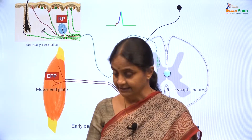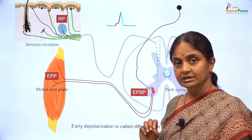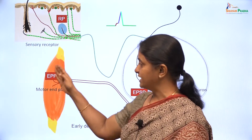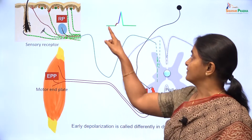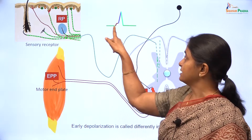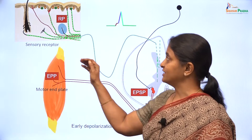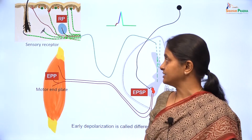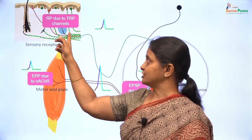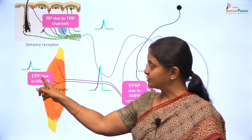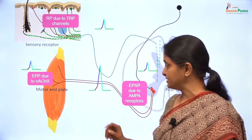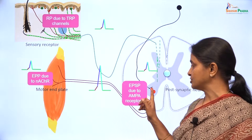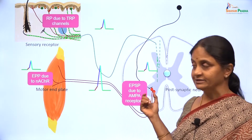We have now considered that the action potential contour is very similar in a sensory neuron, in a post-synaptic neuron, and in the motor end plate in the skeletal muscle. The rest of the events are the same — it is only the early depolarization which differs from location to location. This early depolarization is called a receptor potential in a sensory receptor and it is due to transient receptor potential channels. It is called the end plate potential in the skeletal muscle and is due to the nicotinic acetylcholine receptor. It is due to the AMPA type of glutamate receptors in post-synaptic neurons and this early depolarization is called an EPSP in this location.